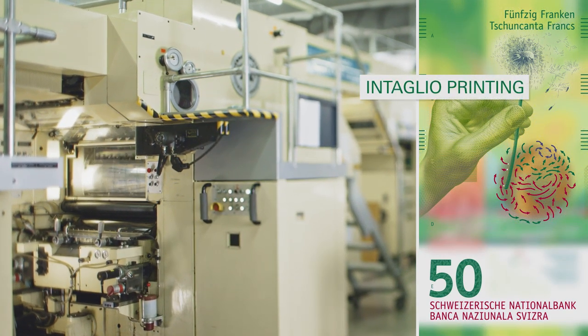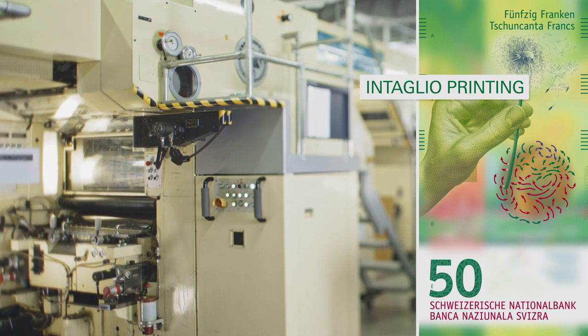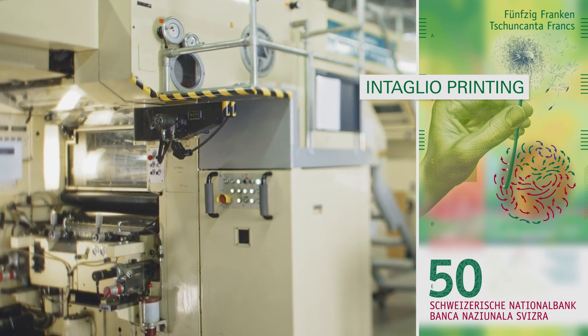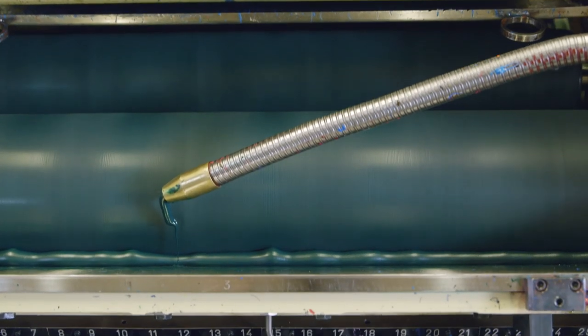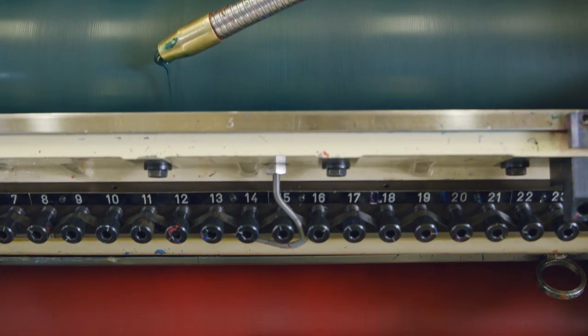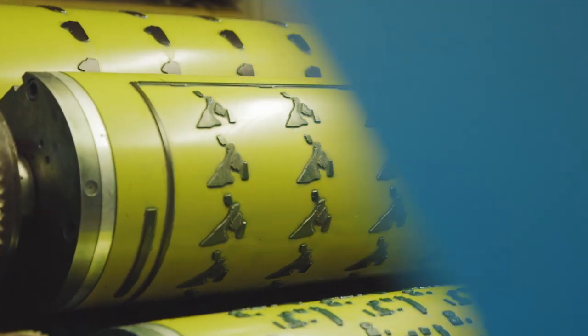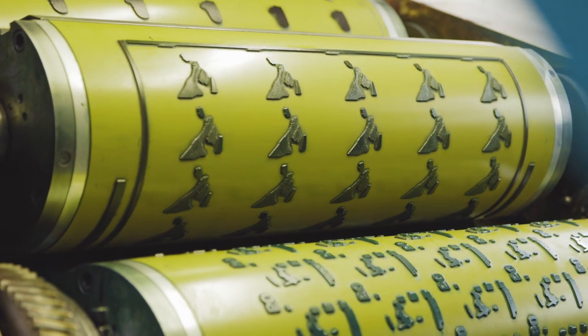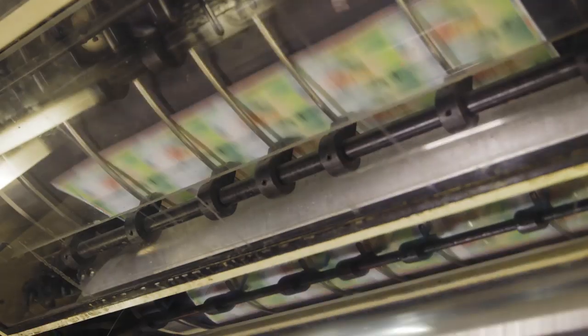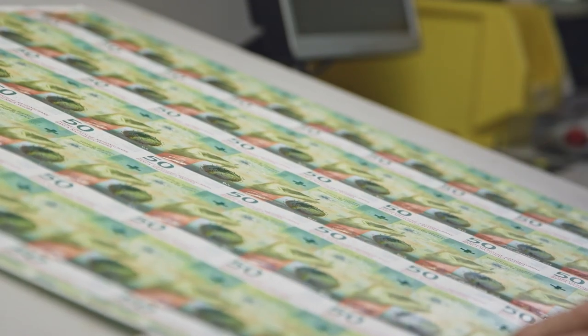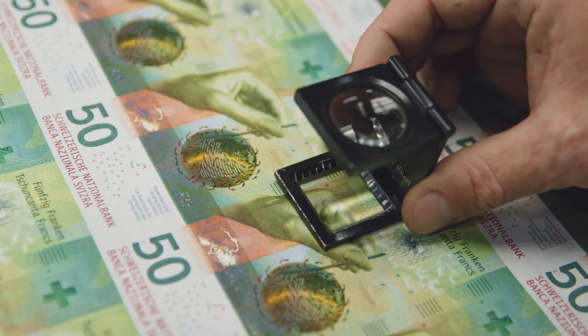Intaglio printing is one of the most important stages in the printing process. Coloured inks are applied to the grooves in the printing plates. Both the front and back of the note are printed. Ink is applied to the paper under enormous pressure and at high temperatures, creating a relief structure that can be felt when touching the note.